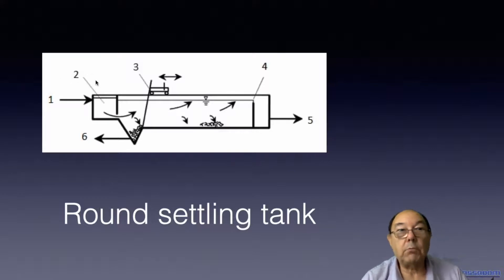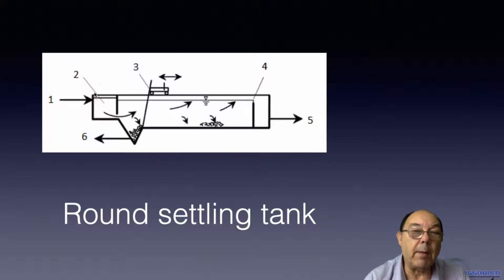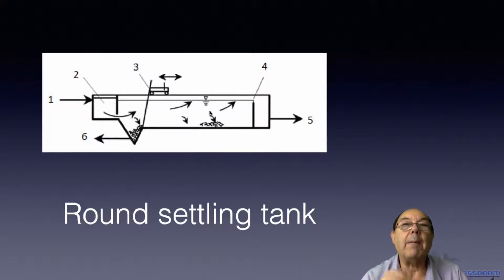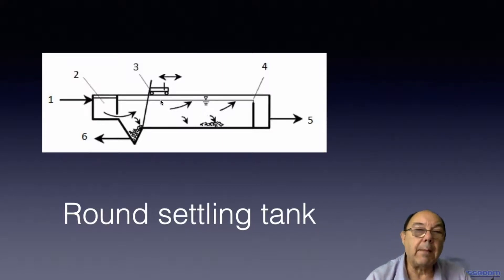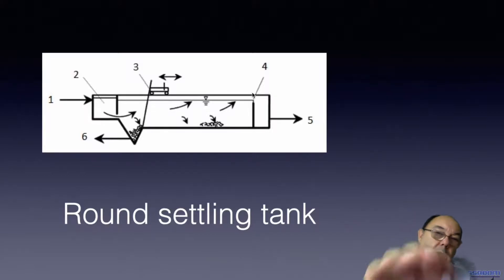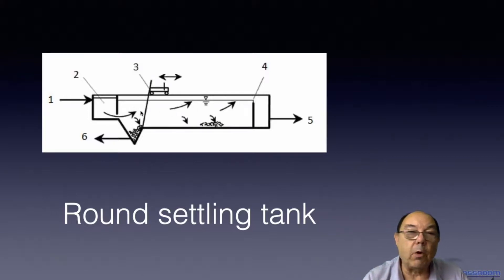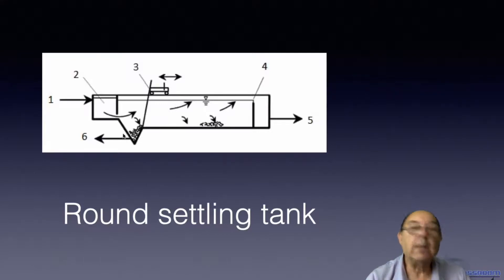Water comes in here and there's a baffle that will reduce the amount of turbulence, because one of the things that's essential for all these types of settling tanks or clarifiers is that we have laminar flow, not turbulent flow. Laminar flow means that all the flow is in layers, all going in one direction with no turbulence. By getting laminar flow you'll get good settling, and then the sludge can be scooped up and taken away.